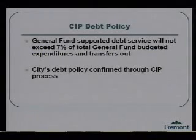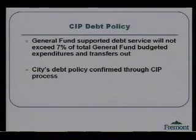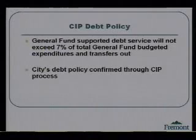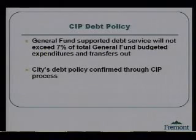The city has a long-term capital debt policy, which sets the parameters for issuing debt and provides guidance in the timing and structuring of long-term debt commitments. The city typically uses debt financing only for one-time capital improvement projects and large equipment purchases, and only under certain circumstances — including when the project conforms with the general plan, if there's an emerging critical need or response to a mandate, or when the project's life cycle equals or exceeds the term of the financing. Debt financing is not considered appropriate for recurring purposes such as current operating or maintenance expenditures. General fund-supported debt service will not exceed 7% of total general fund budget expenditures and transfers out, and the entire debt policy is affirmed through the CIP process.